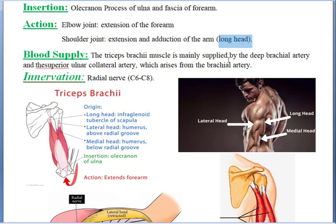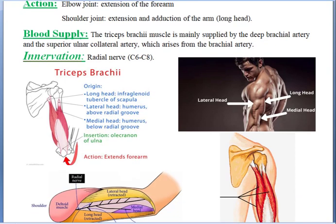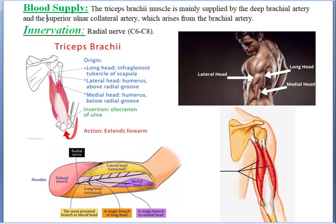What is its blood supply? The triceps muscle is mainly supplied by the deep brachial artery and the superior ulnar collateral artery, both of which arise from the brachial artery. So mostly the triceps muscle is supplied by branches of the brachial artery.